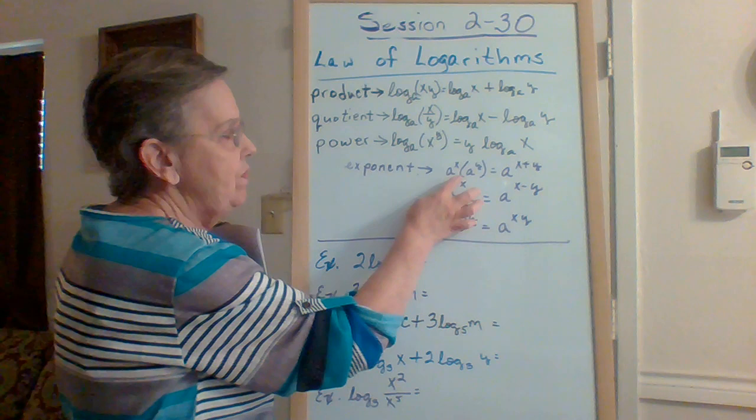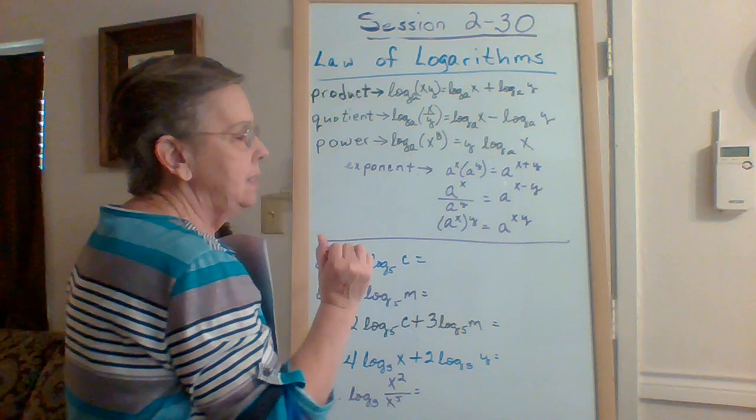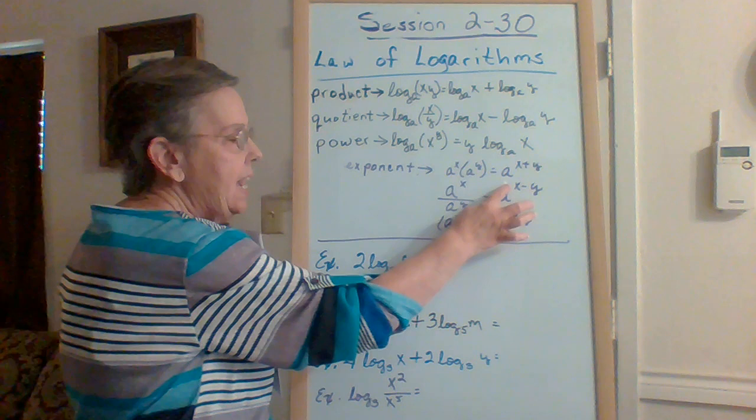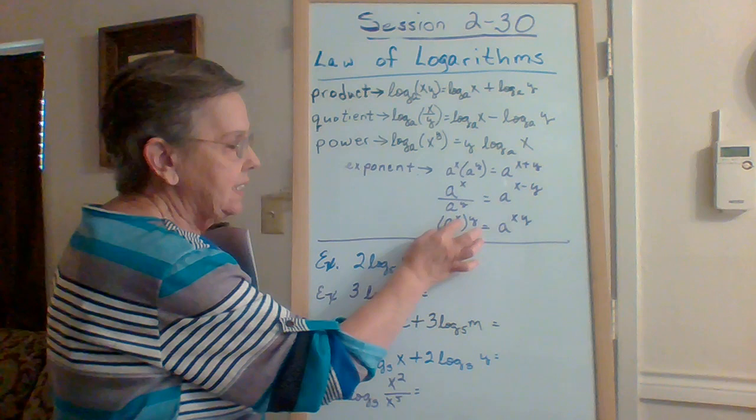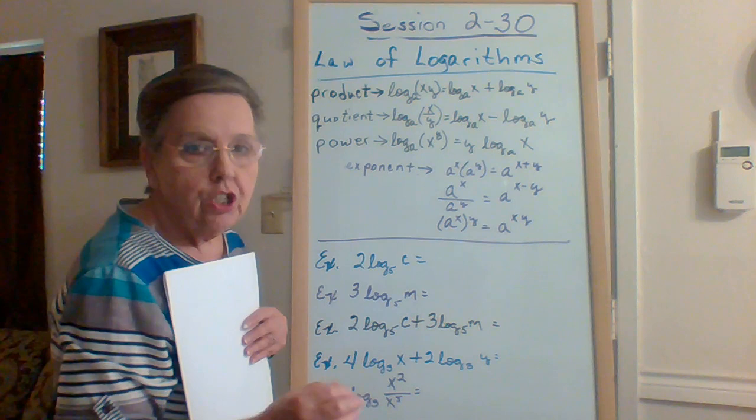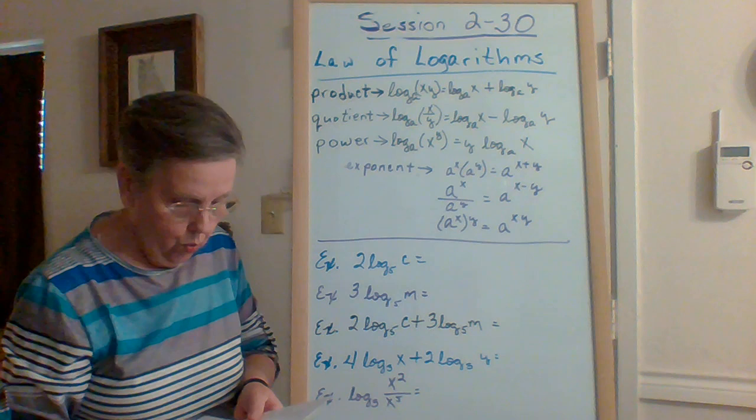Remember when we were multiplying monomials: a to the x times a to the y is a to the x plus y; a to the x divided by a to the y is a to the x minus y; and a to the x raised to the y power is a to the xy. We're using those same rules for logarithms.